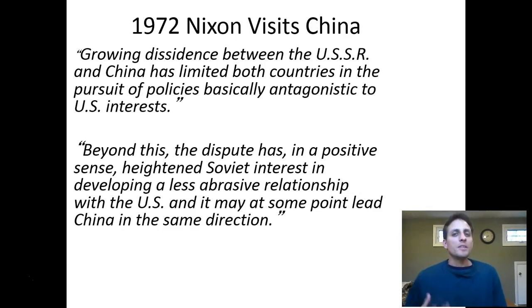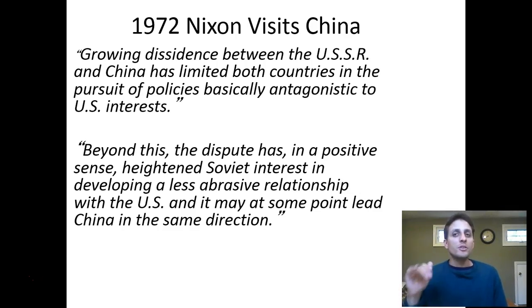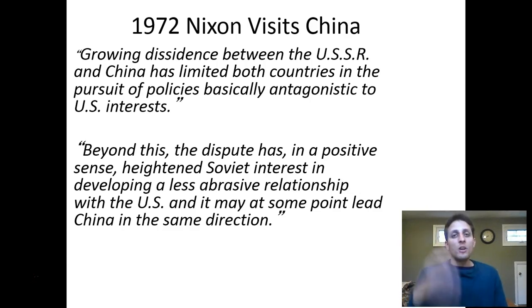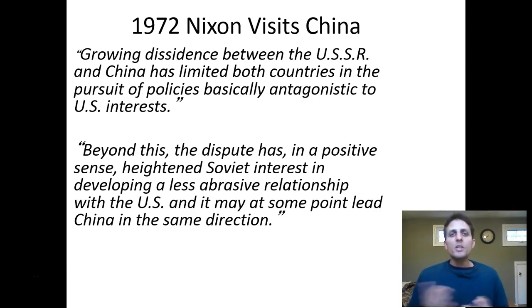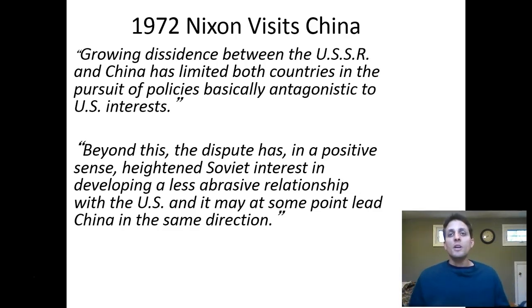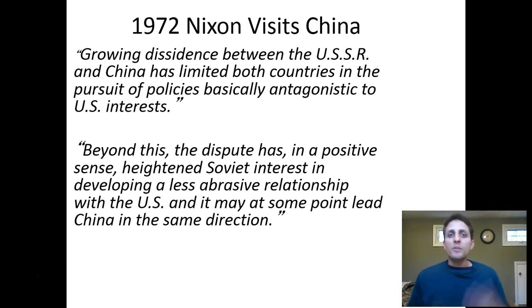Nixon is trying to open up the Chinese market, which is a huge market for American manufactured goods. Fast forward 30 to 40 years to our time period — China sells tons of manufactured goods to us. But this relationship begins really with Nixon and Mao, and later when Deng Xiaoping takes over, you get the extension and expansion of this relationship and when China starts to change as a country. It starts under Nixon when he reaches out to China.